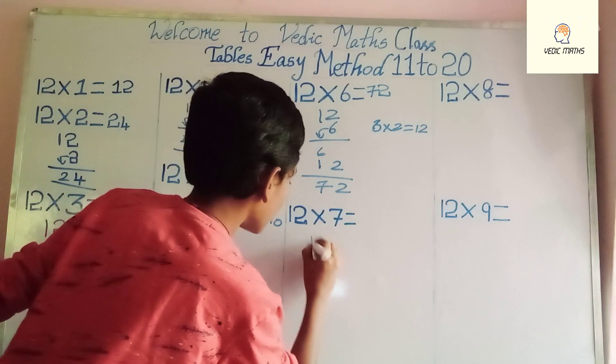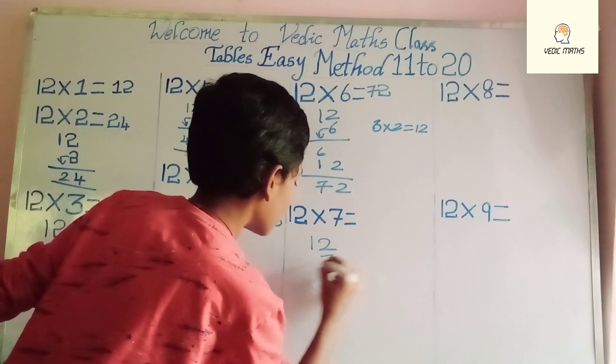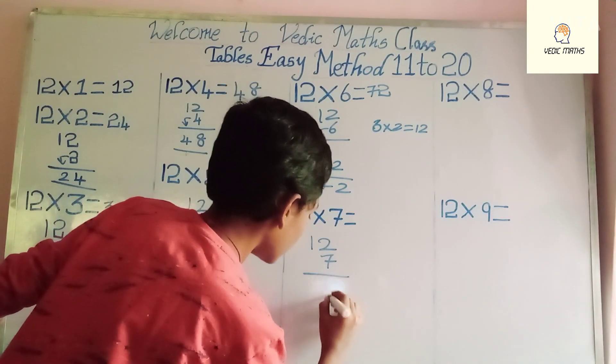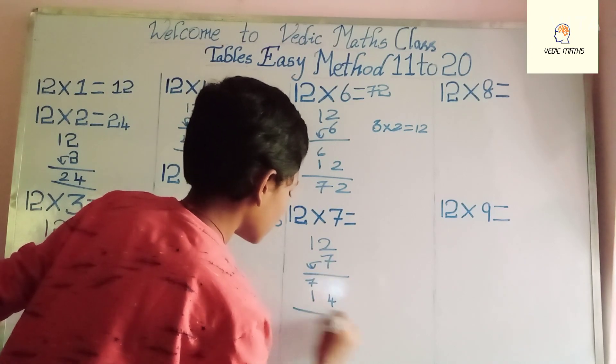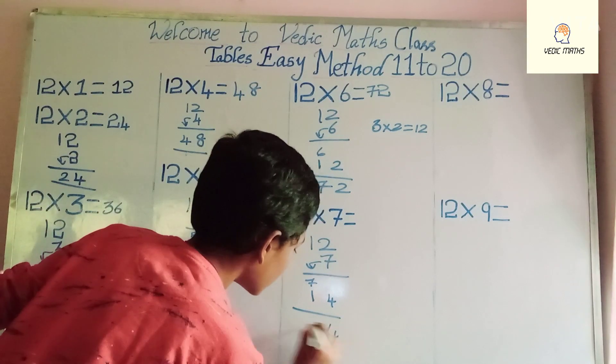And 12 into 7: 7 2's are 14, and write 7 here and write 7 here, that's 84.